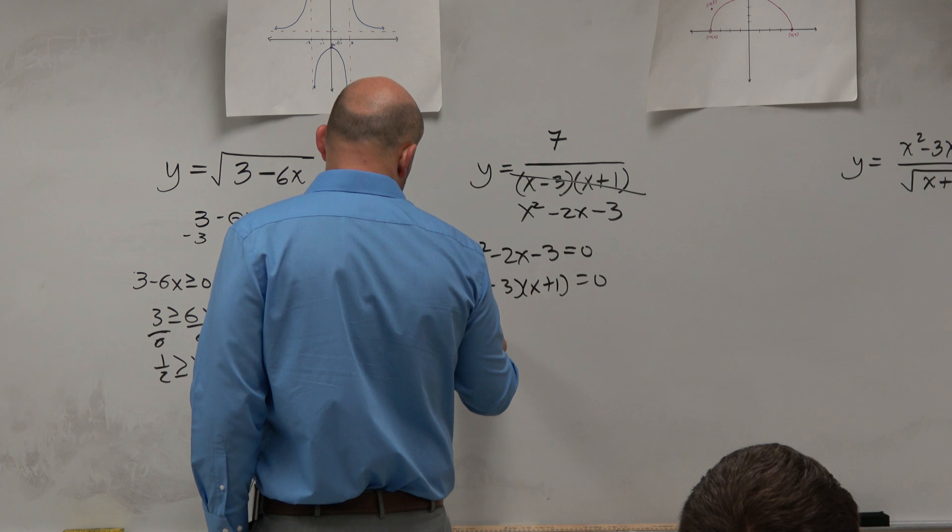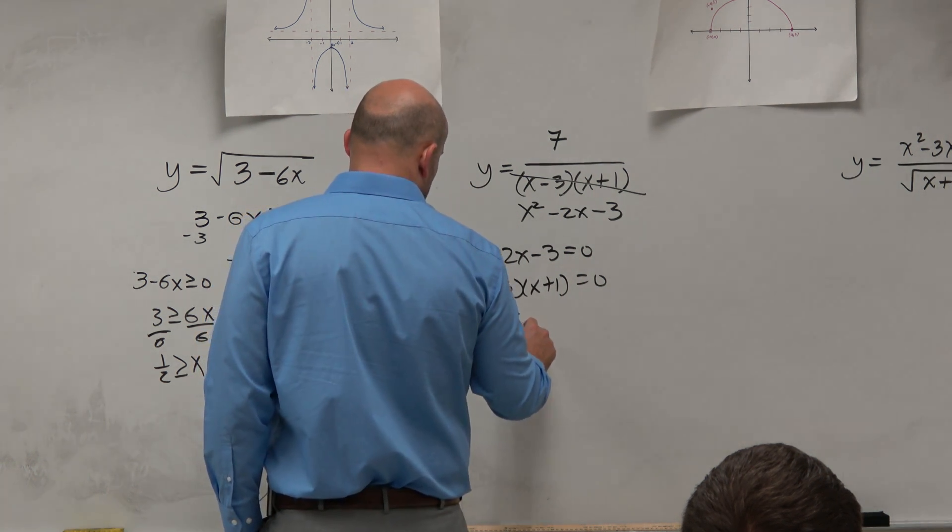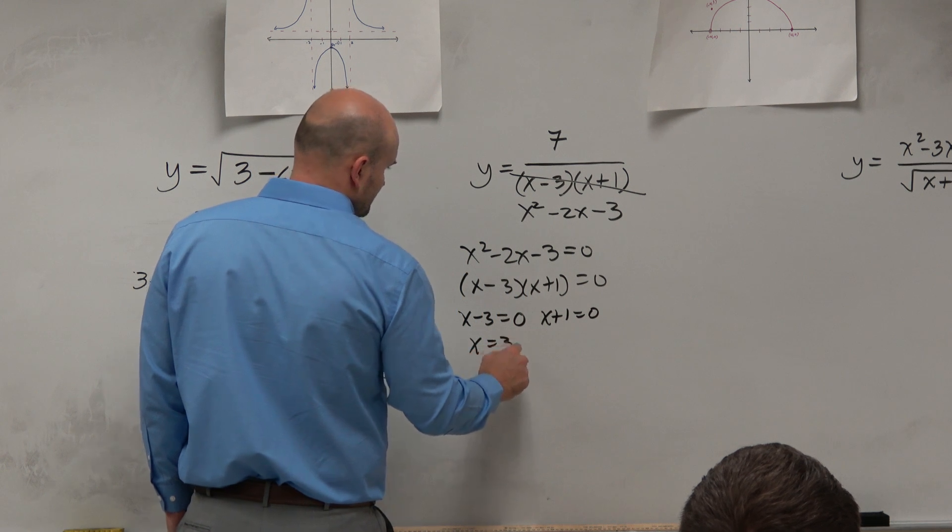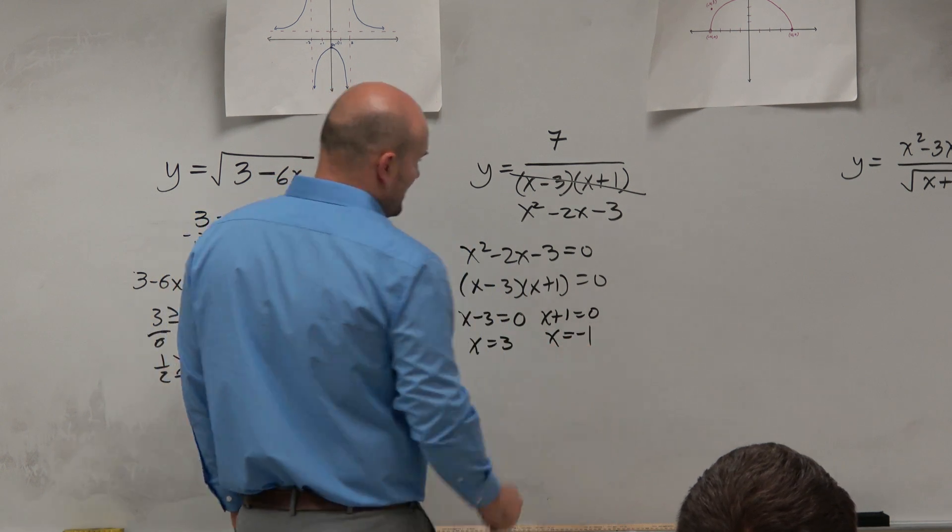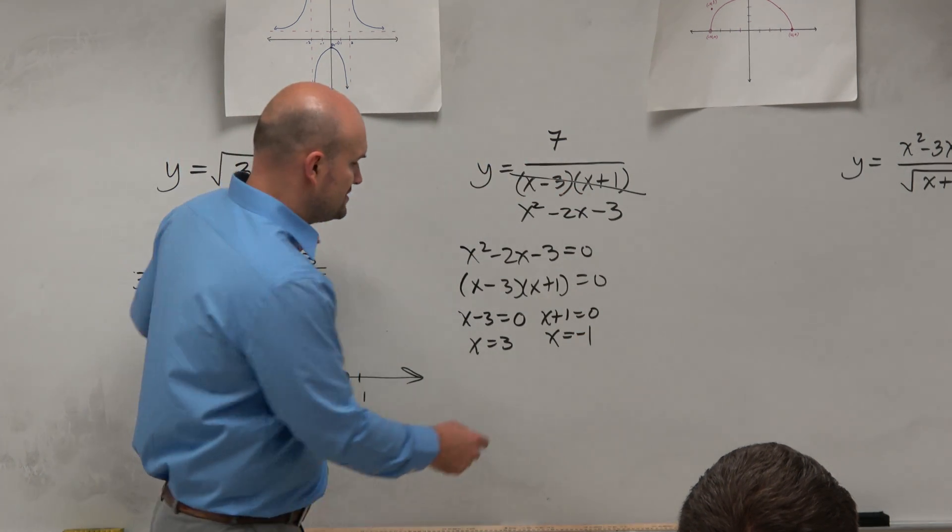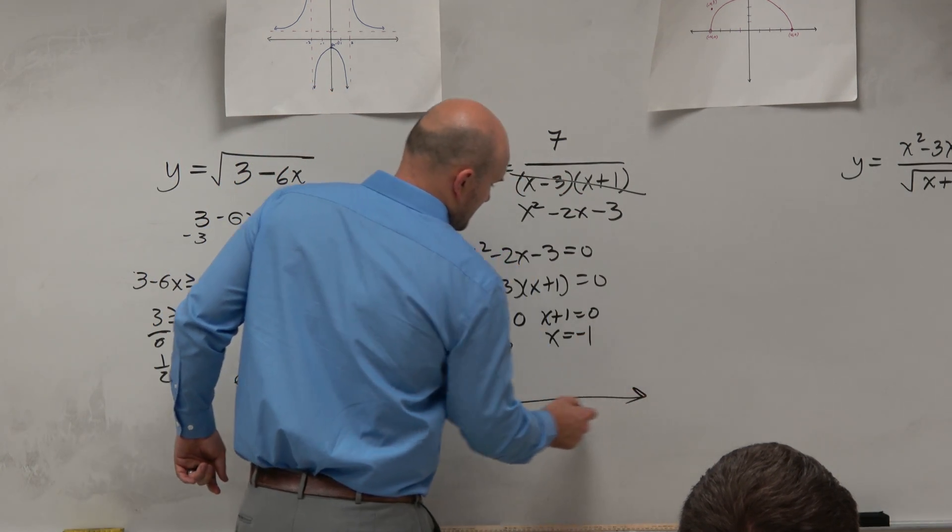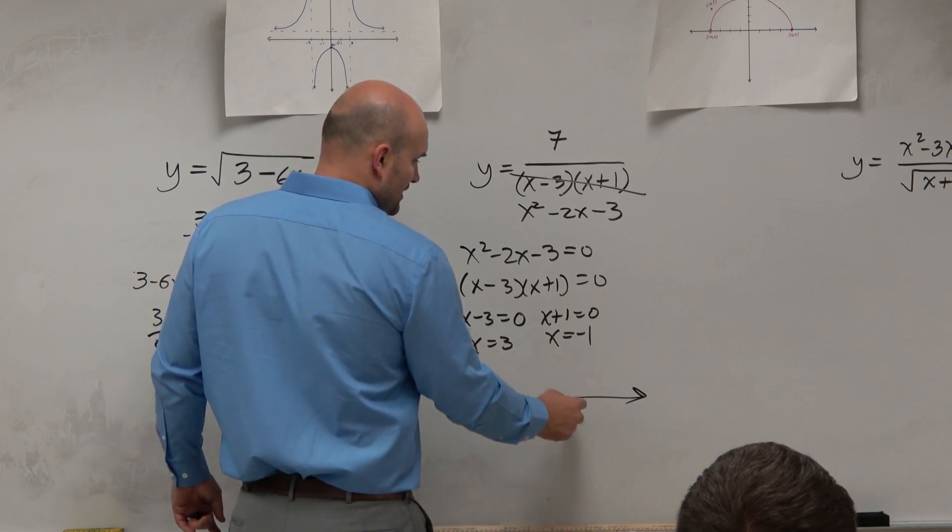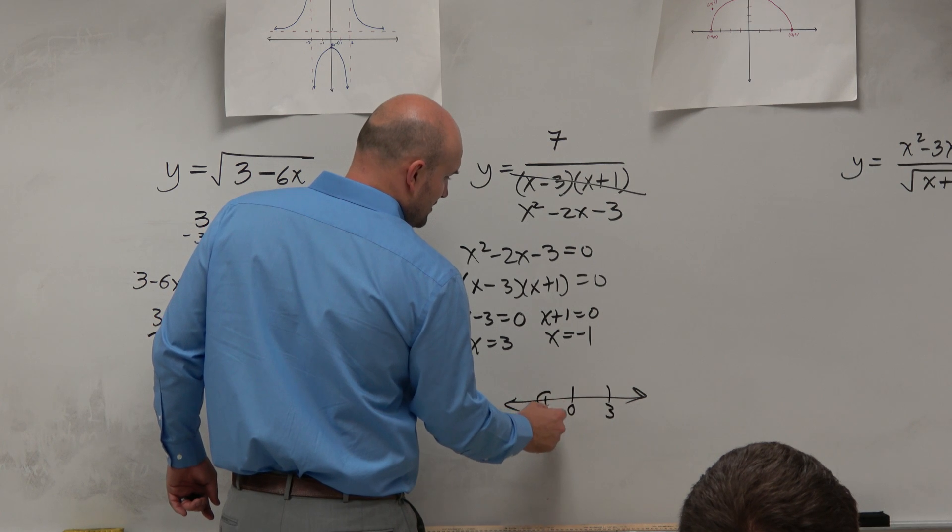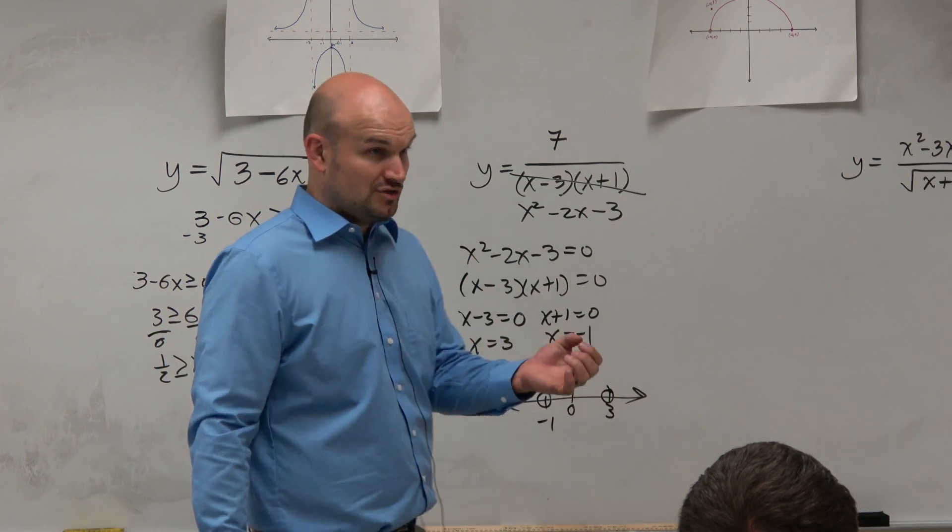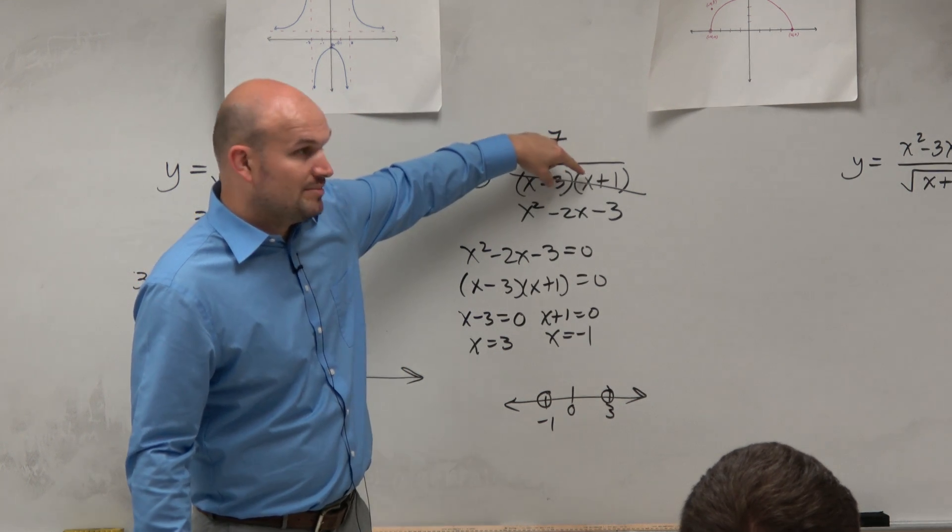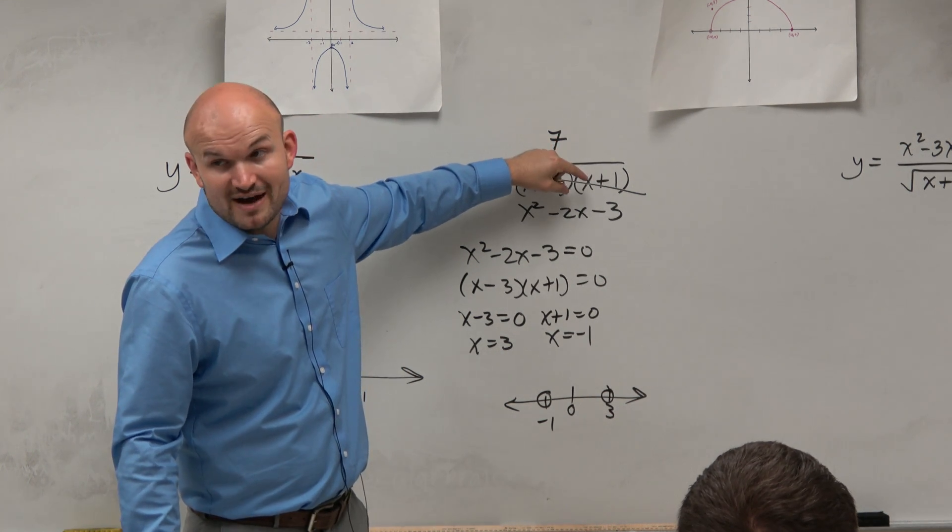Or if we want to remember back our algebra two days, we can apply the zero product property and realize, oh, 3 and negative 1 are the values that make that negative. So I go and I graph 3 and I graph negative 1. And I use open circles, because those are the values that are not defined. Wouldn't you guys agree that 3 and negative 1 make the denominator 0? Yes. So they're undefined.